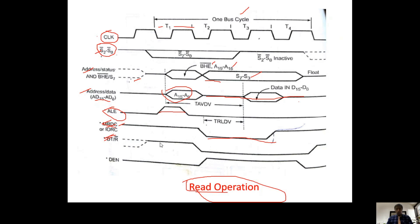DT/R bar is a tri-state pin — before T1 it is in tri-state, meaning neither 0 nor 1. For a read operation, DT/R bar should be 0; for a write operation it should be 1. Before T2 it should be tri-state because data lines are only available from T2 to T4. In 8086 maximum mode we have DEN (not DEN bar as in minimum mode), and DEN should be high during T2 to T4 to activate.